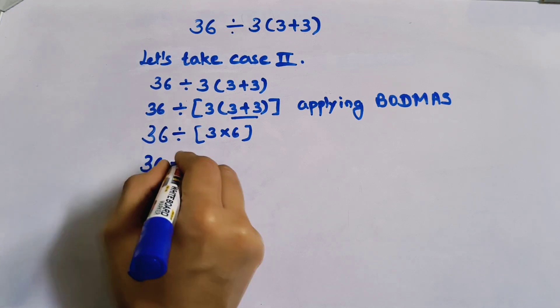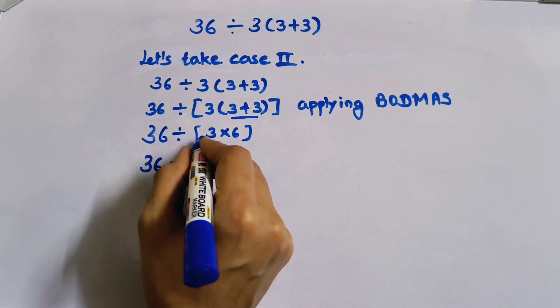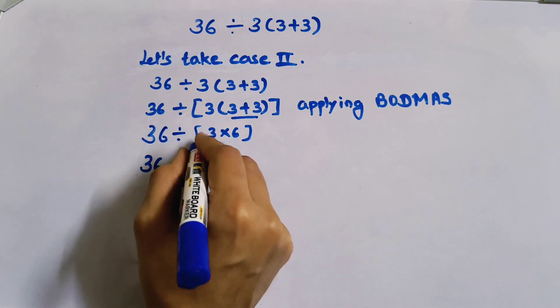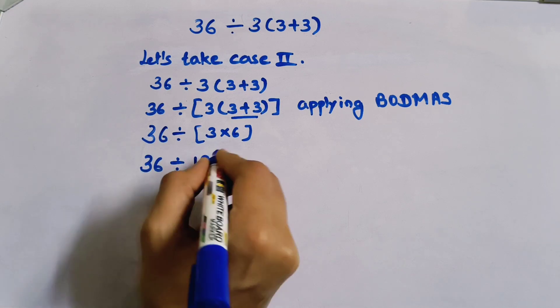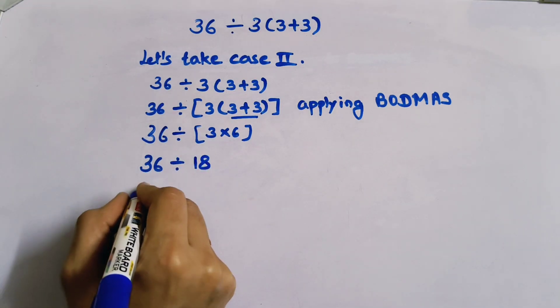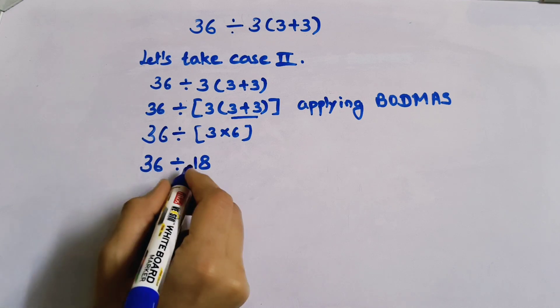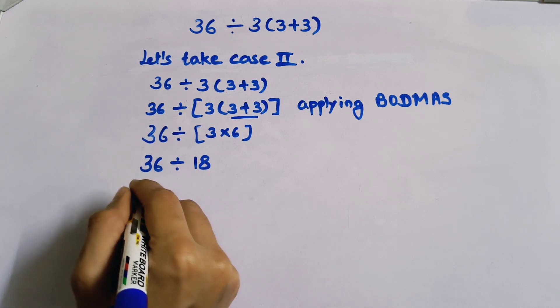Now I will open this square bracket. 3 times 6 equals 18. Now 36 divided by 18.